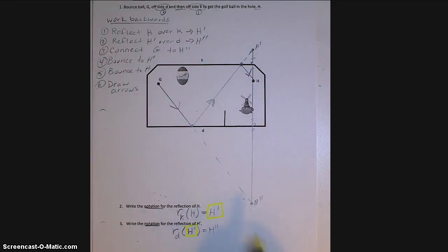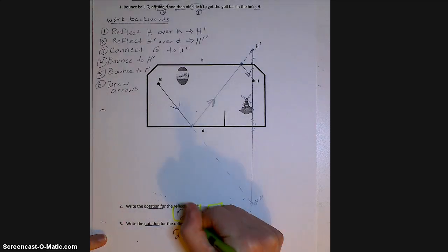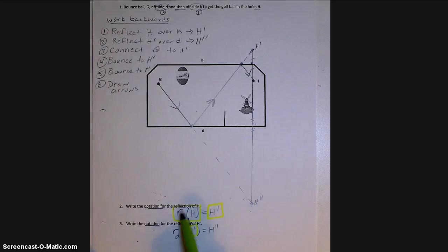And we're going to do that by using substitution. So I know that H prime is the same as this, the reflection of H over the line K. Well, if I look at this notation and instead of putting an H prime here, if I substitute this, I'm going to replace my H prime by putting this notation into here. It would look like this.